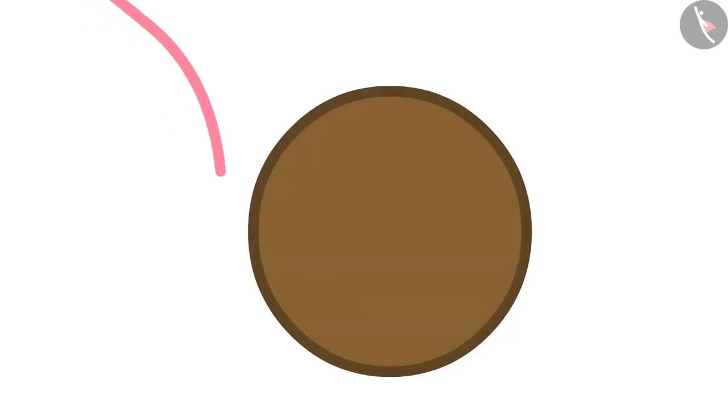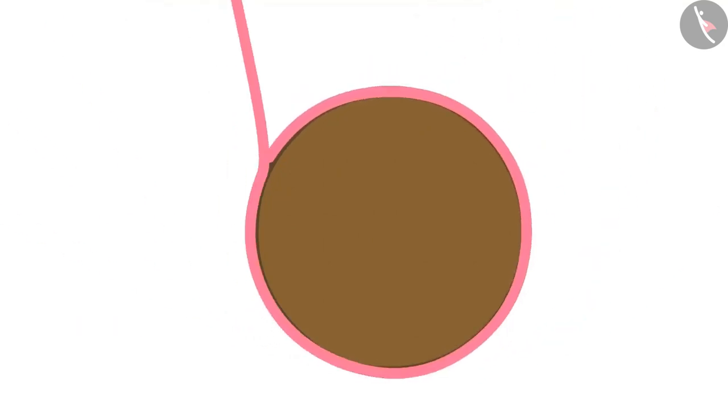By placing one end of the thread at a point on the edge of this table, I will wrap it around the complete edge. After that, I will mark the thread where it meets the starting point.